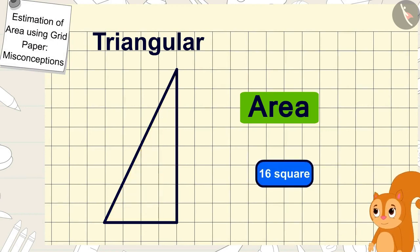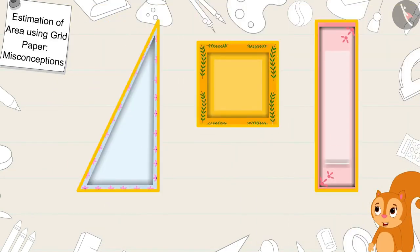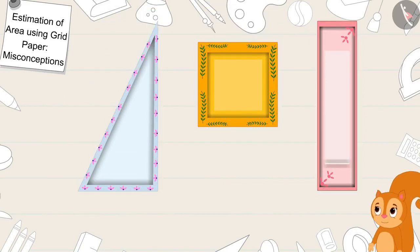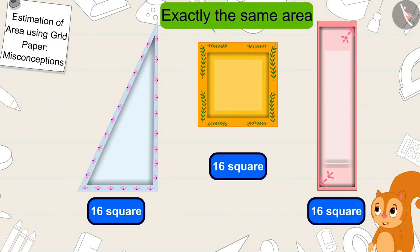Hey Gaggoo, there are sixteen squares in the area of the triangle shaped plate too. You are right, the shapes of these plates may be different but their areas are exactly the same, Chanda said to Gaggoo.